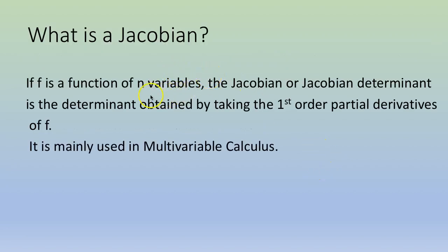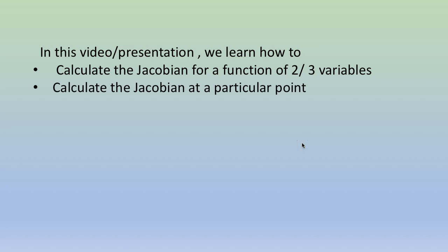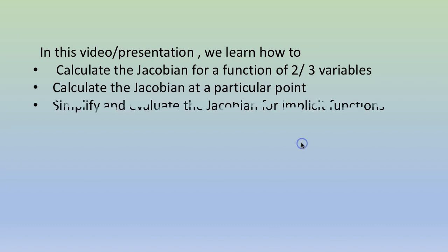What is a Jacobian? If f is a function of n variables, the Jacobian or Jacobian determinant is the determinant obtained by taking the first order partial derivatives of f. This is mainly used in multivariable calculus. In this video, we will learn how to calculate the Jacobian for a function of 2 and 3 variables, to calculate the Jacobian of a function at a particular point, and to simplify and evaluate the Jacobian for implicit functions.